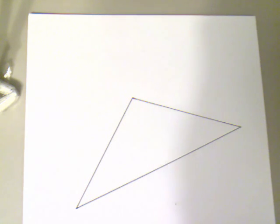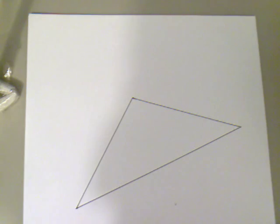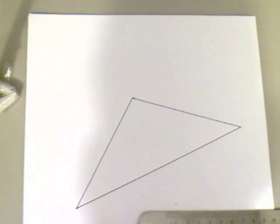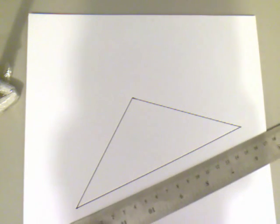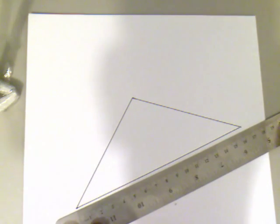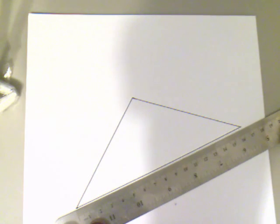So in order to fill those in, we need to first know the midpoint of each segment. To find the midpoint, measure each side of your triangle and find its halfway point.